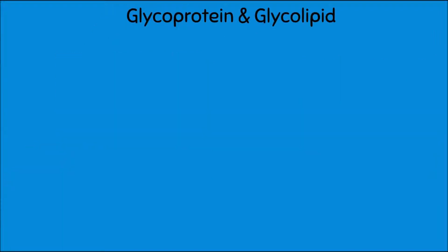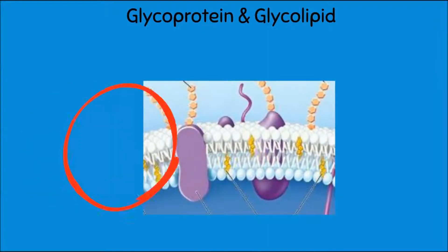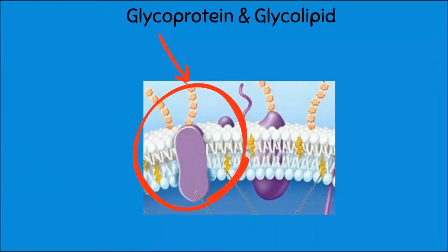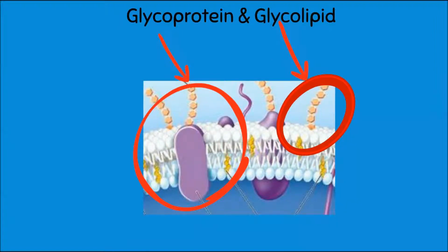Other major components are glycoproteins and glycolipids. A glycoprotein is an integral protein with a carbohydrate chain attached to it — 'glyco' indicates the carbohydrate chain. A glycolipid has a carbohydrate chain attached to a lipid, in this case a phospholipid — again 'glyco' indicates the carbohydrate chain attached to the lipid.